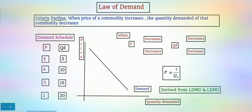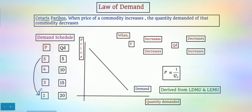We have seen the price and quantity demanded relationship as a demand schedule. We have a demand schedule here for mango. When the price of mango is rupees 5 per kg, the consumer demands 5 kg. When the price is reduced to 4 rupees per kg, he demands even more. As the price falls further, the quantity demanded increases even more. This forms the law of demand. When the price decreases from rupees 5 to rupees 2 per kg, the quantity demanded increases from 5 kg to 20 kg.